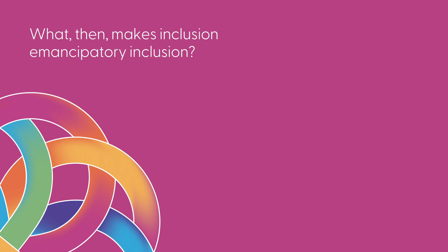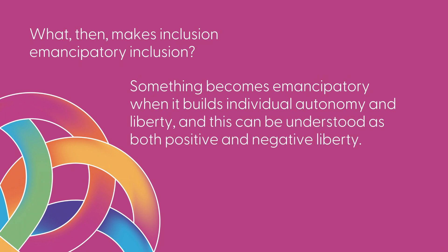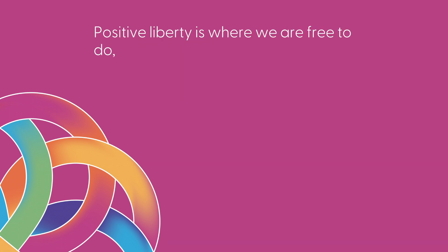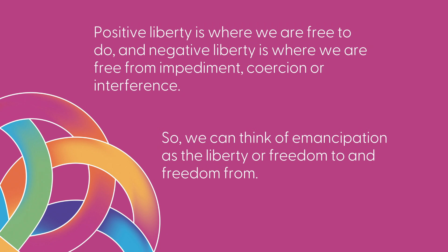What then makes inclusion emancipatory inclusion? Something becomes emancipatory when it builds individual autonomy and liberty, and this can be understood as both positive and negative liberty. Positive liberty is where we are free to do, and negative liberty is where we are free from impediment, coercion, or interference. So we can think of emancipation as the liberty or freedom to, and freedom from.